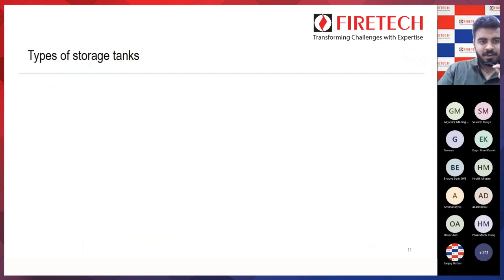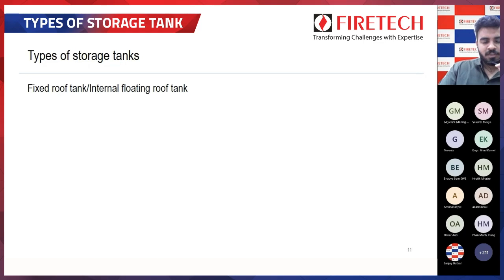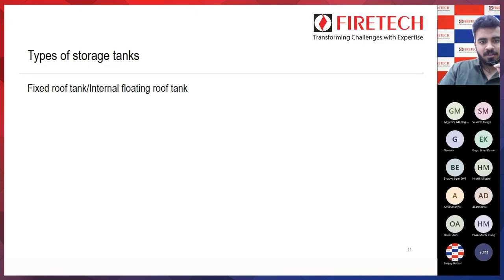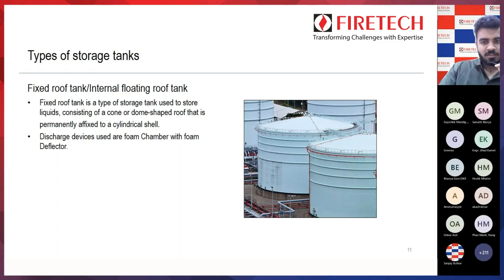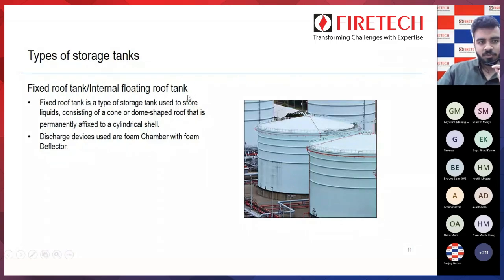Moving ahead, we will understand the types of storage tanks. First is the fixed roof tank or internal floating roof tank. This is a fixed type of tank with a cone roof permanently affixed — it is not a floating type. The discharge devices used here are foam chamber with foam deflector. This can be called a fixed roof tank or internal floating roof tank.